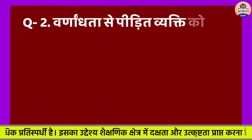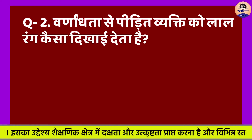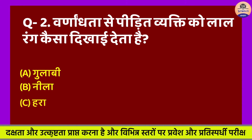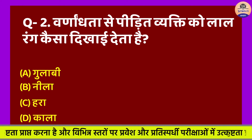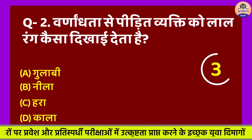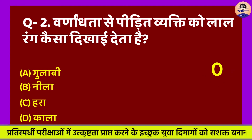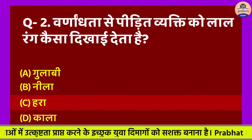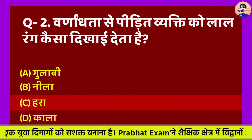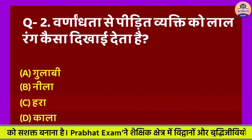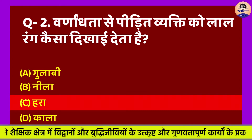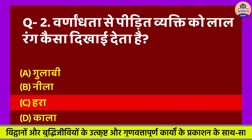Question No. 2: Varnandhata se peedit vyakti ko lal rang kaisa dikhta hai? Option A. Gulabi, B. Neela, C. Hara, D. Kala. Sahi jawab hoga Option C. Varnandhata mein rogi ko lal evam hara rang pahchanne ki kshamata nahi hoti. Is rog se mukhya roop se purush prabhavit hota hai. Is rog ki vahak striyan hoti hain.